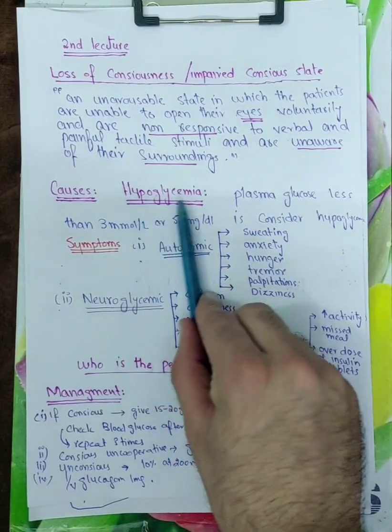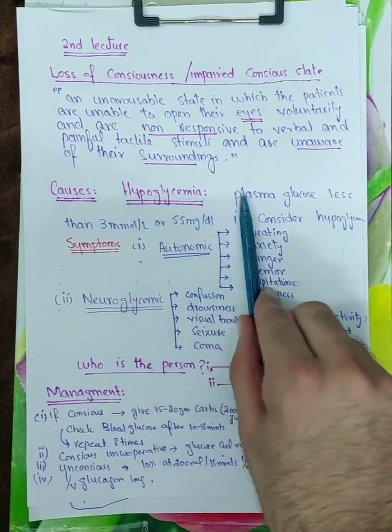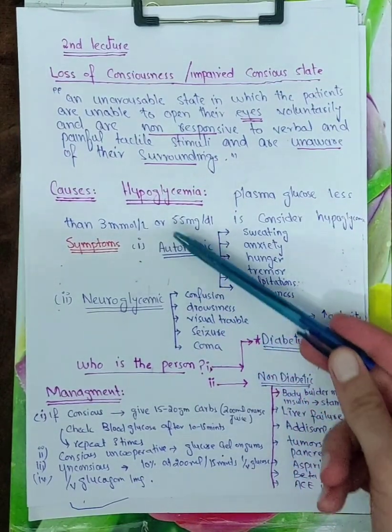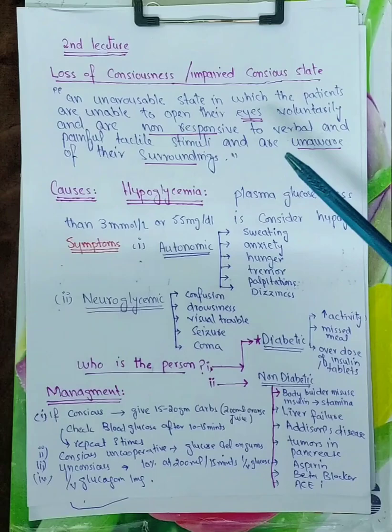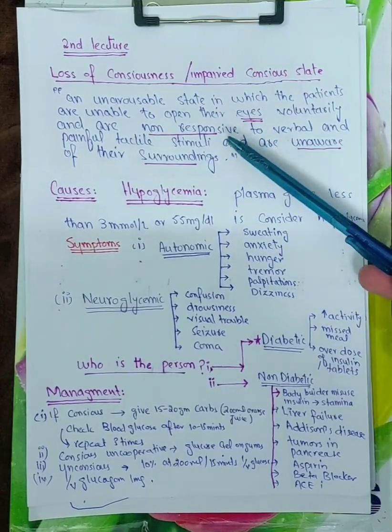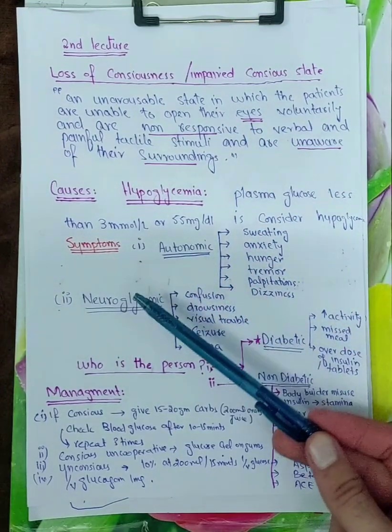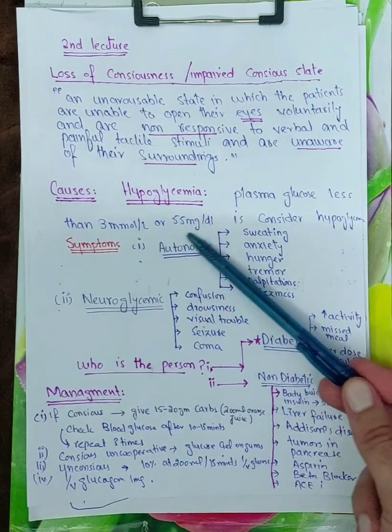If blood glucose level is less than 3 millimole per liter or 55 milligram per deciliter (some books mention 60 milligram per deciliter), it is considered hypoglycemic. So you will say that this patient is in the state of hypoglycemia. Hypo means low and glycemia means low glucose level in the blood. So the patient in the hypoglycemic state might not be in the state of impaired consciousness first. He might present with symptoms like autonomic disturbance.